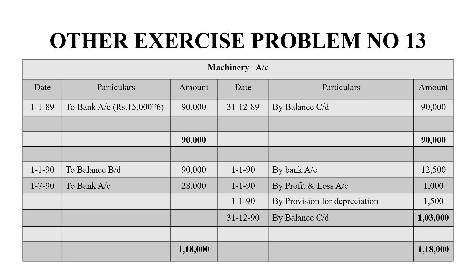In 1990, we purchased another machine, so we debit bank account by Rs.28,000. When we have a provision maintained, we have reduced the amount. We can use the provision for depreciation account by 1-1-1990.